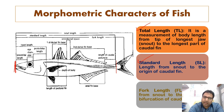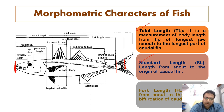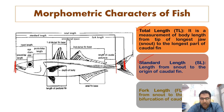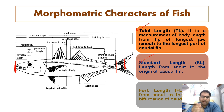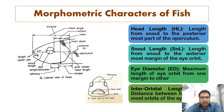The fork length is measured from the snout up to the origin of the fork — that is, the bifurcation point of the caudal fin where it divides. It is called the fork length.